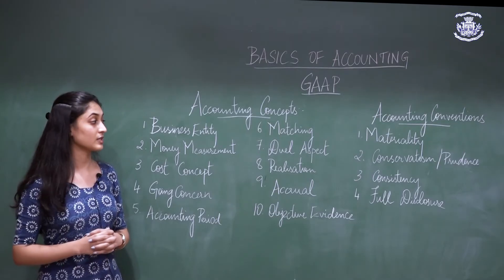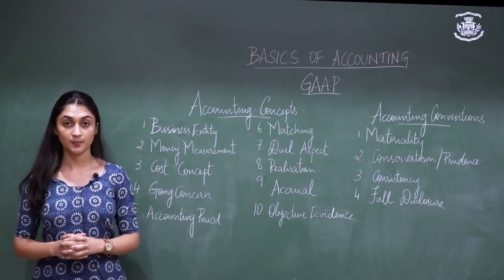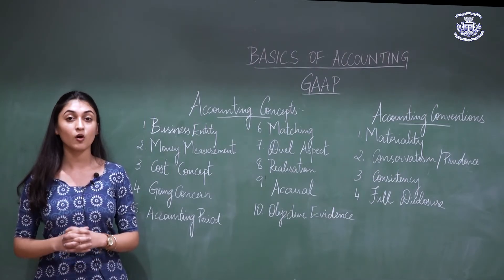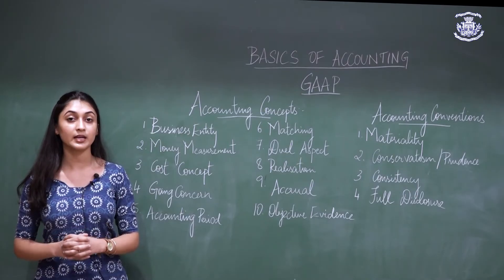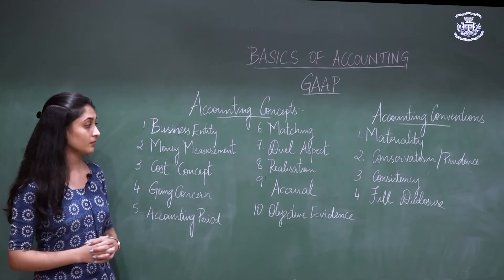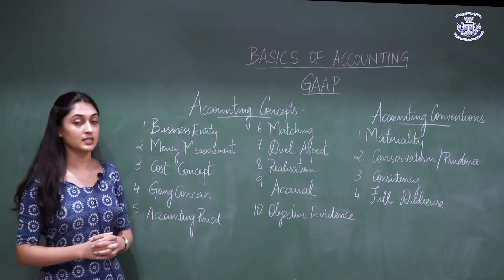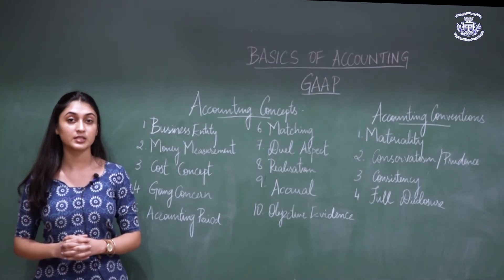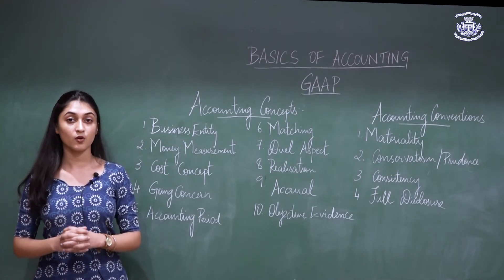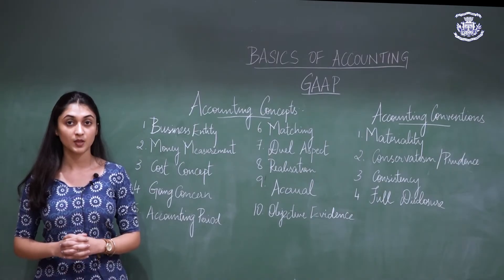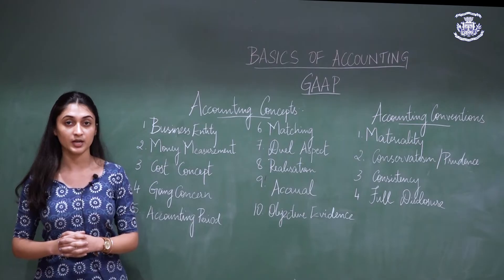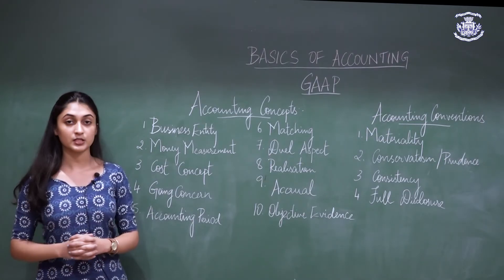The next accounting convention is the convention of conservatism or prudence. This convention states that all anticipated losses are to be recognized while all anticipated or unrealized gains are to be ignored. The convention of consistency states that all accounting policies adopted by the organization should remain consistent and unchanged from one accounting period to another.